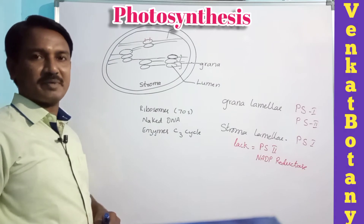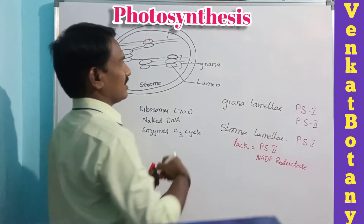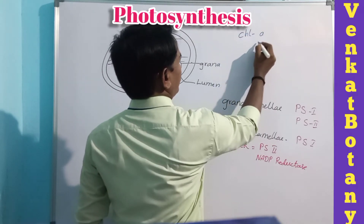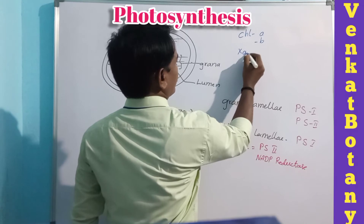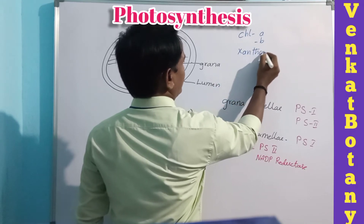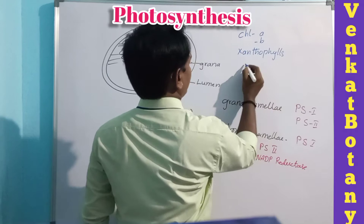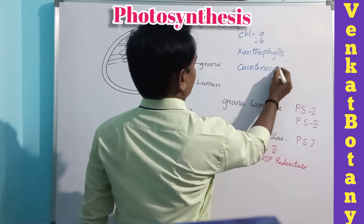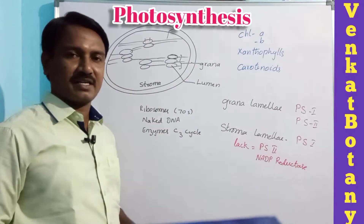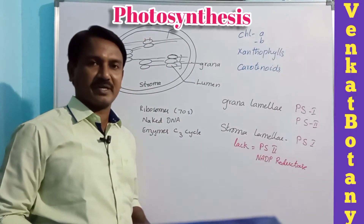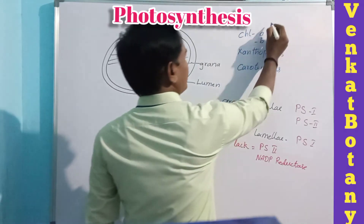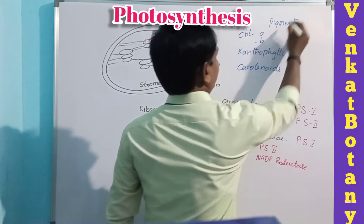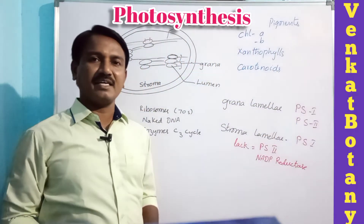On the thylakoid membrane or grana lamellae, chlorophyll pigments are present. These pigments include chlorophyll a and chlorophyll b. The function of these pigments is to trap light energy.